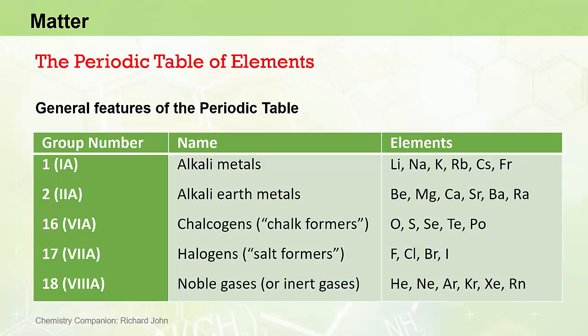However, on the right-hand side of the Periodic Table, group 16 or group 6A elements are called the chalcogens or chalk formers. Group 17 or group 7A are the halogens or the salt formers. And group 18 or 8A are the noble gases, and they are the gases that tend not to form chemical compounds and tend not to take part in chemical reactions.